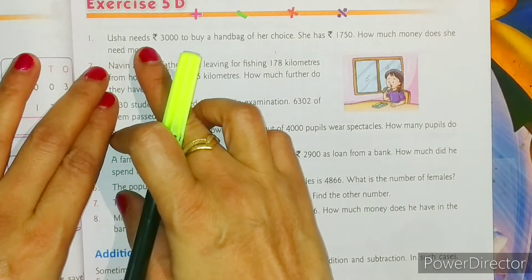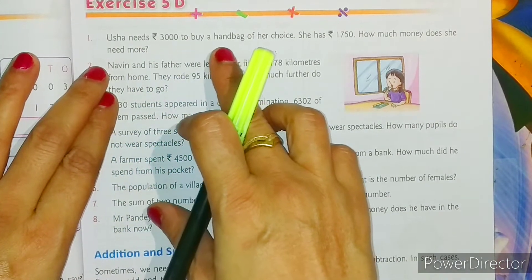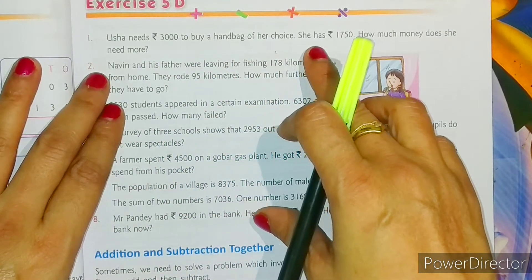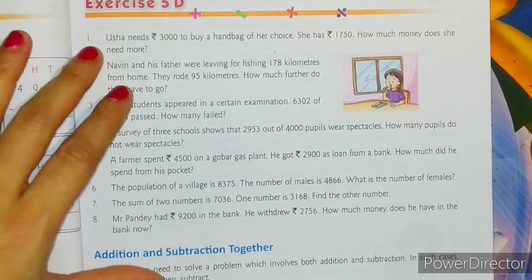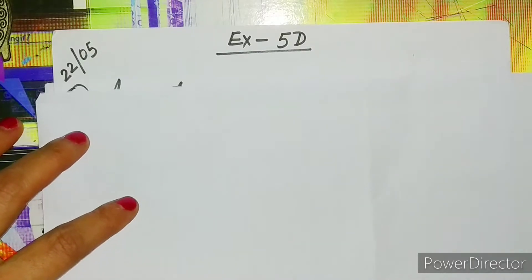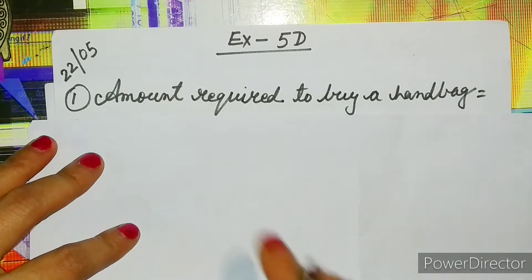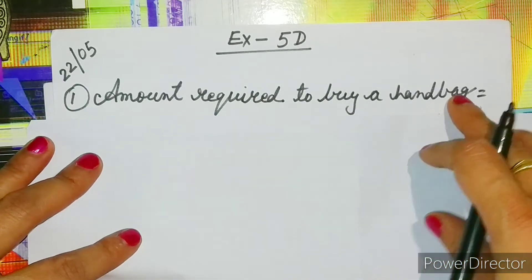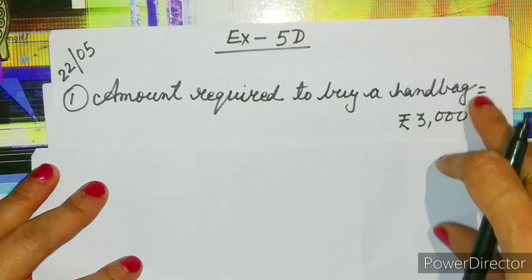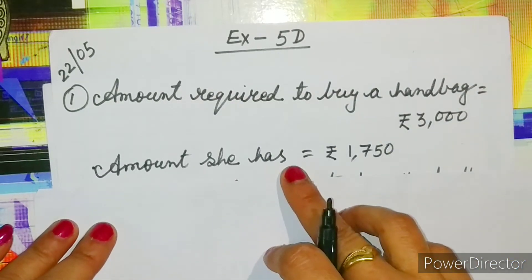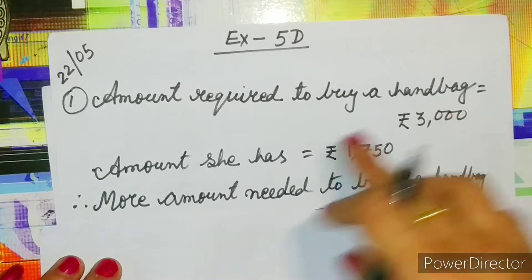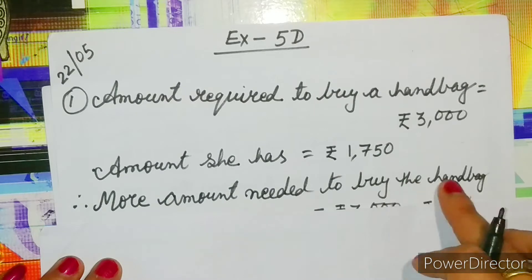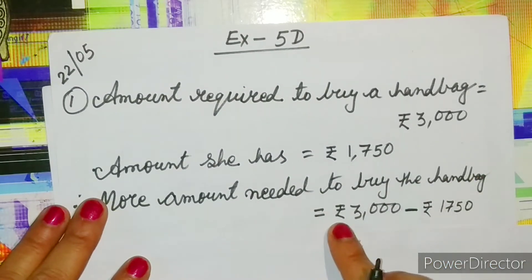The first question says: Usa needs rupees 3000 to buy a handbag of her choice. She has rupees 1750. How much money does she need more? Let us solve question number one. The first statement is: amount required to buy a handbag is equal to rupees 3000. The second statement is: the amount she has is equal to rupees 1750. Therefore, more amount needed to buy the handbag is equal to rupees 3000 minus rupees 1750.